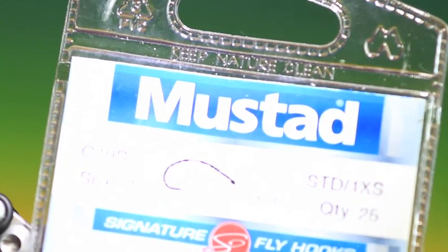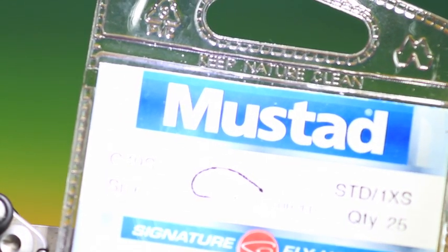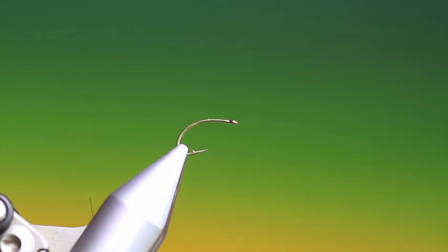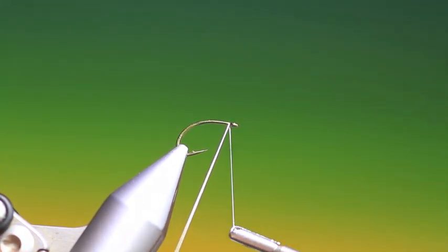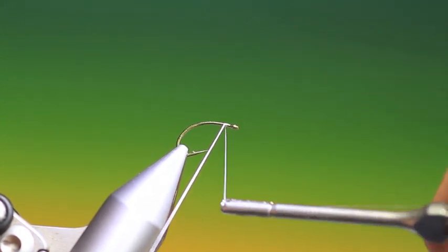We'll start with a Mustad C49S size 12 curved caddis, a midge hook. This is an ultra simple hatching midge that has worked incredibly well for me.